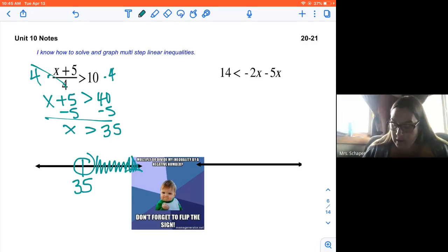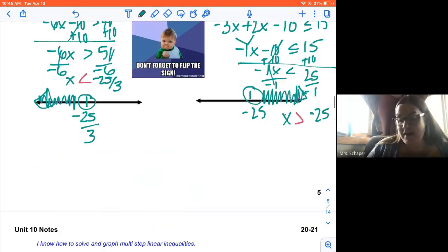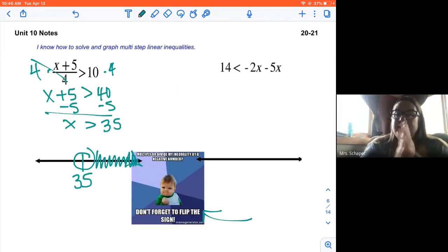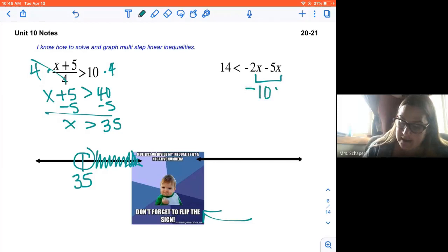Okay. Like my little picture here. Did you catch it back here too? Don't forget to flip the sign. All right. Next one. 14 is less than -2x - 5x. We're going to start by combining like terms. -2x - 5x is -10x. So 14 is less than -10x.